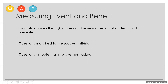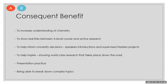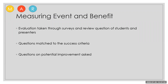Now talking about measuring the event benefit — this includes the M for Measurable. Evaluations took place through surveys and review questions from both students and presenters. I wrote questions that match the success criteria, which corresponds to the consequent benefit we defined earlier. We also asked what the potential improvements were.